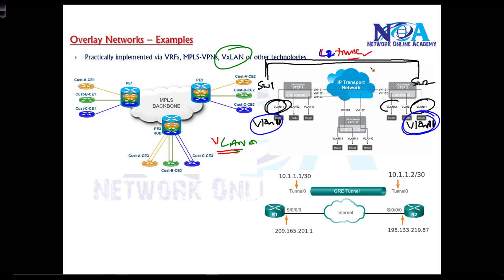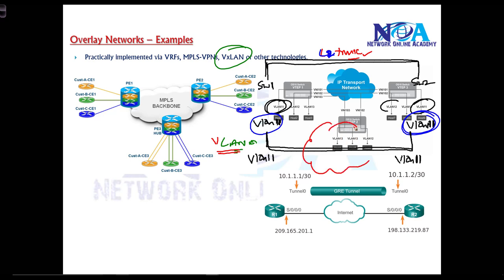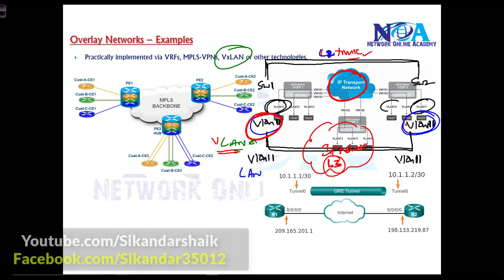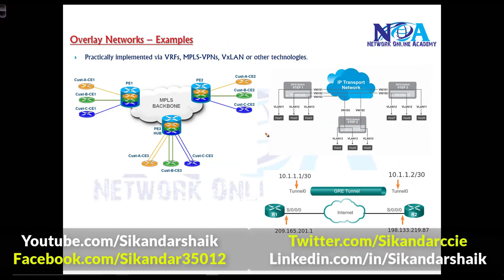With VXLAN, we do the same thing — allowing VLAN 11 users on one side to communicate with VLAN 11 users on the other side — but over an L3 IP network rather than an L2 trunk. We are extending LAN encapsulation over an L3 network. So physically there is an IP network, but logically it looks as if the users of the same VLAN are part of one single LAN or one single network.